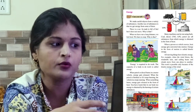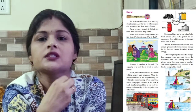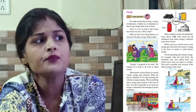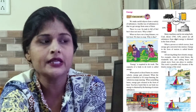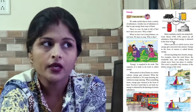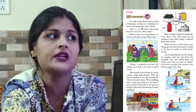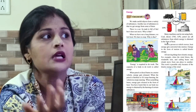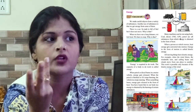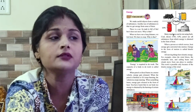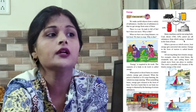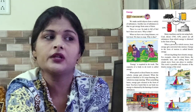In fuels, we have bio gas and LPG — liquid petroleum gas. Many machines can run using fuels: coal, diesel, CNG, LPG, petrol are all substances from which energy is obtained in the form of heat. When these substances are burned, energy is released. Energy is obtained in the form of heat.